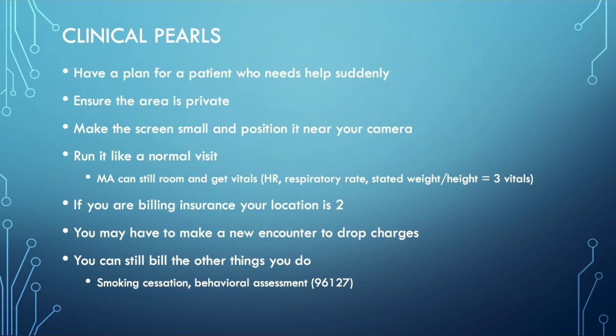Run it like a normal visit — your MA can still room the patient and get virtual vitals. Teach the patient to take their heart rate, count their respiratory rate, and get a stated weight or height — those count as three vitals. If they have a blood pressure machine or scale at home, you can get those too. For those billing insurance directly in private practice: change your location code to 2, not 11, otherwise it will get denied. You may need to create a charge-only encounter with documentation. Remember you can still bill for additional services like smoking cessation, GAD, or PHQ using 96127 codes.